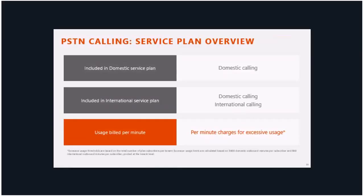There is usage billed per minute for toll-free dial-in and international dial-out. With PSTN calling, the domestic plan includes domestic calling; the international plan includes domestic and international calling. The domestic usage is 3,000 minutes a month per user, and that usage is pooled. So if a company has 10 users, that's 3,000 minutes times 10, giving them 30,000 minutes a month total.